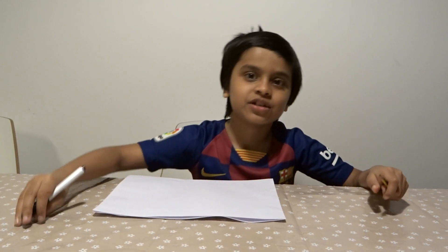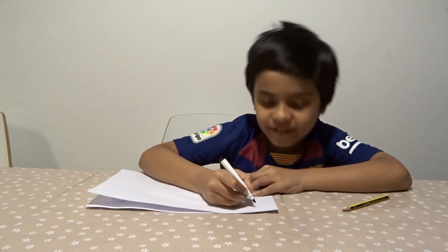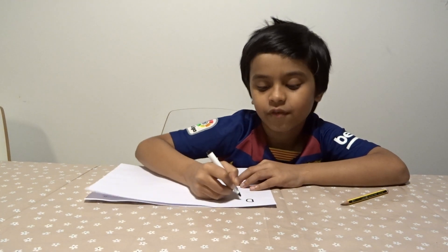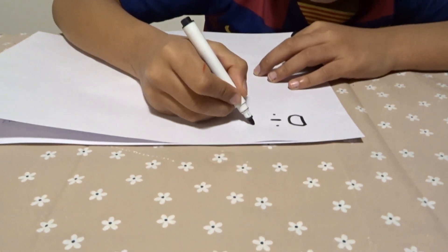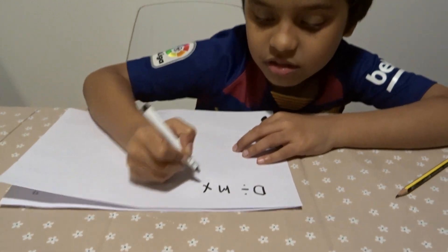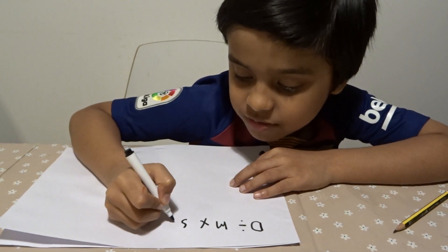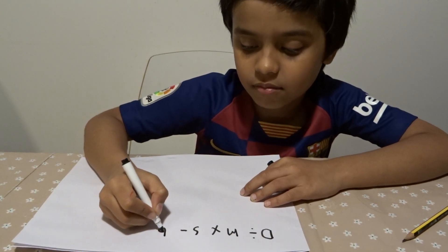Hello guys, today I'm going to do division in an easy way. We're going to do Dead Monkey Smell Bad. D is for Division, M is for Multiplication, S is for Subtraction, and B is for Bring down.